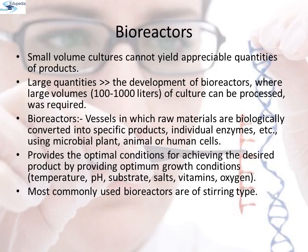Bioreactors: small-volume cultures cannot yield appreciable quantities of product. To produce it in large quantities, the development of bioreactors — where large volumes of 100 to 1000 litres of culture can be processed — was required. Bioreactors can be thought of as vessels in which raw materials are biologically converted into specific products, individual enzymes, etc., using microbial, plant, animal, or human cells. A bioreactor provides optimal conditions for achieving the desired products by providing optimum growth conditions such as temperature, pH, substrate, salts, vitamins, and oxygen. The most commonly used bioreactors are of the stirred type.